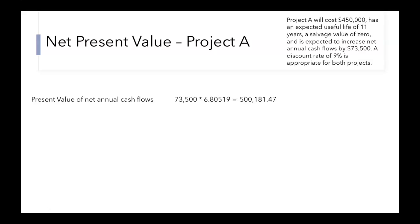To find the net present value, we compare the present value we just found to the initial cost, or capital investment. Our initial cost is $450,000. When we subtract those two, we get a net present value of $50,181.47. That's the net present value for Project A.